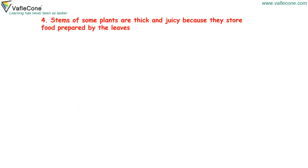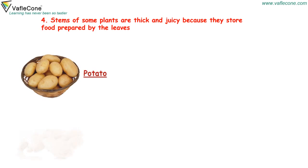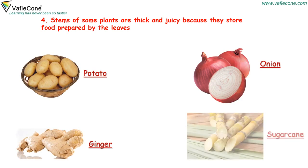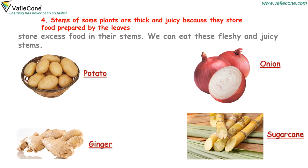The stems of some plants are thick and juicy because they store food prepared by the leaves. Potato, ginger, onion and sugarcane plants store excess food in their stems. We can eat these fleshy and juicy stems.